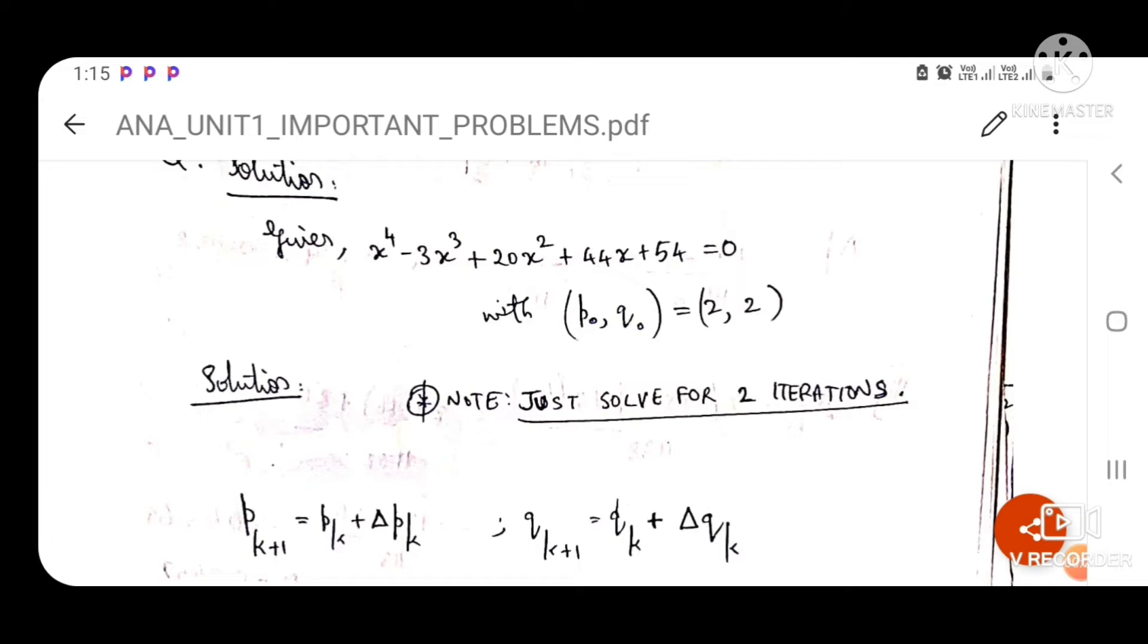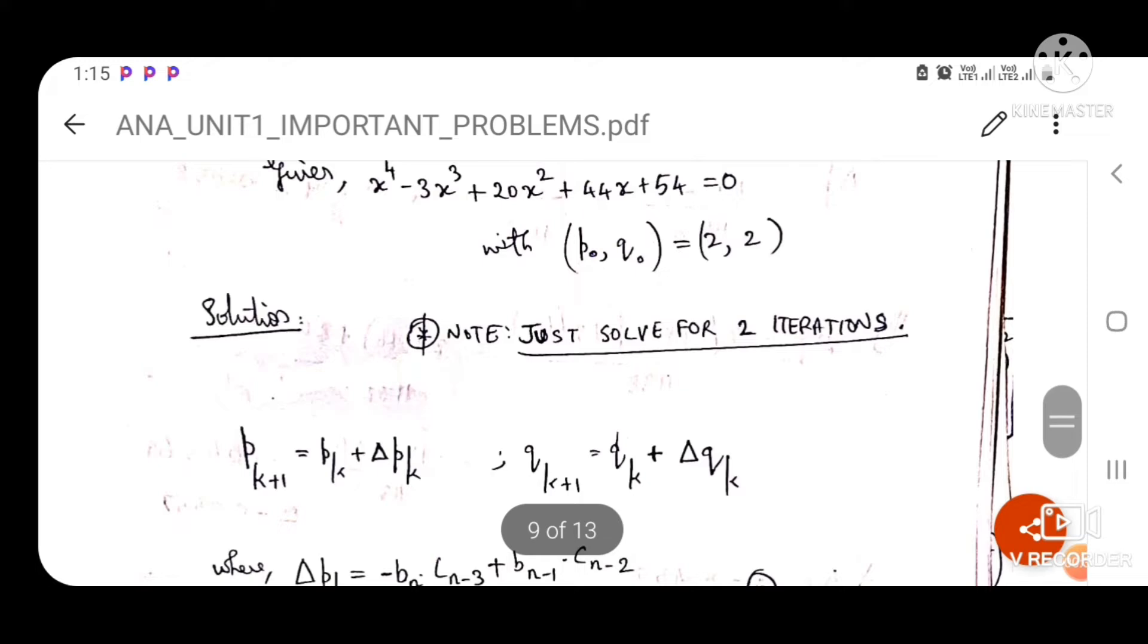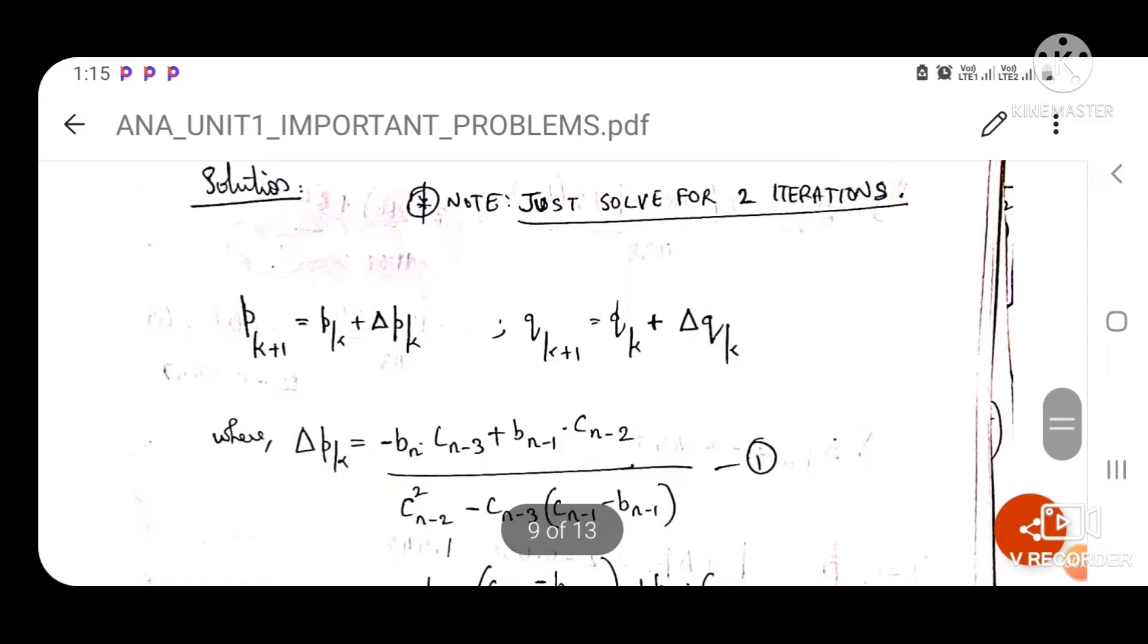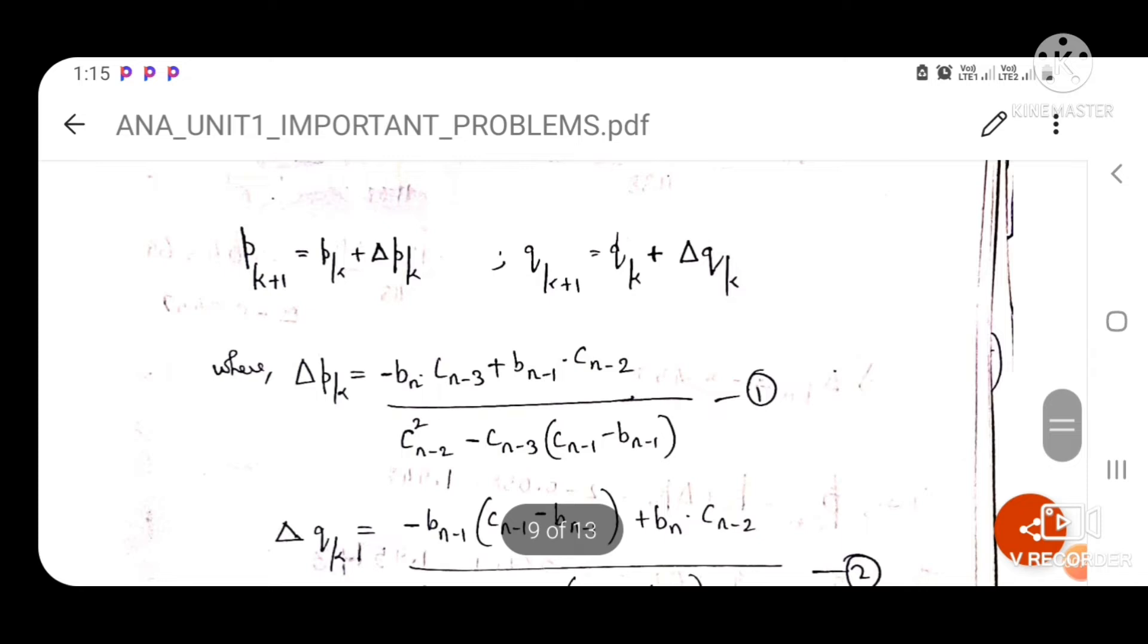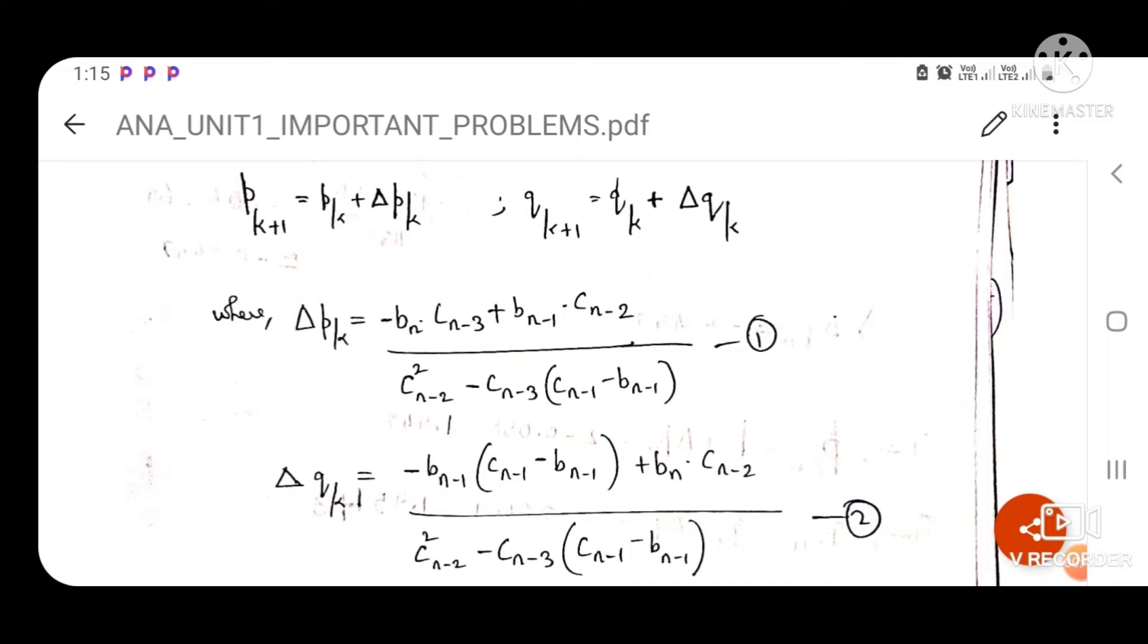We should just solve it for two iterations. Basically what we should do is remember that the formula is PK plus 1 equals to what I have given, and the same goes for QK plus 1.